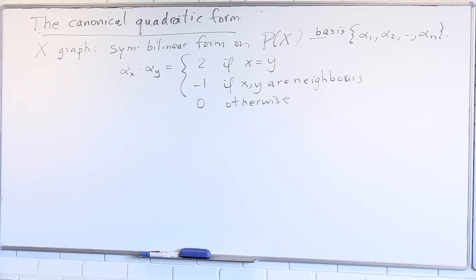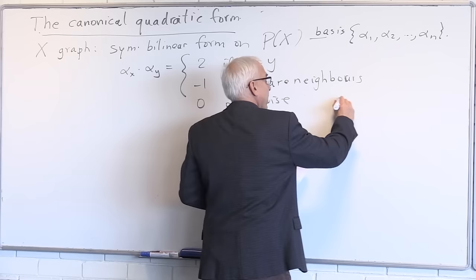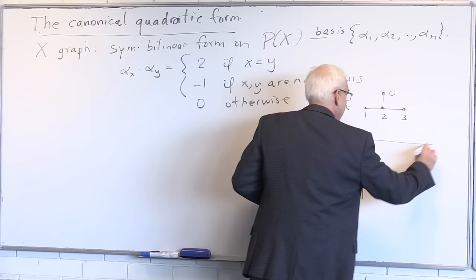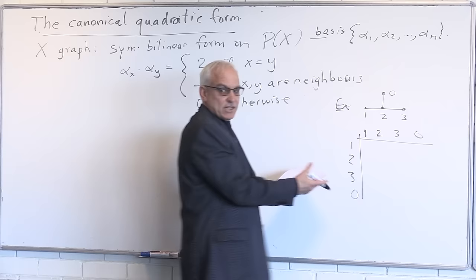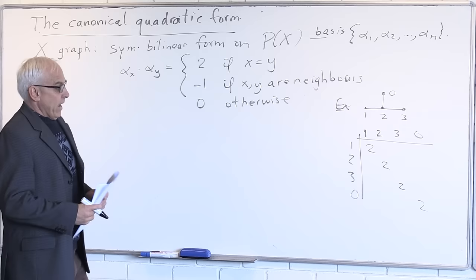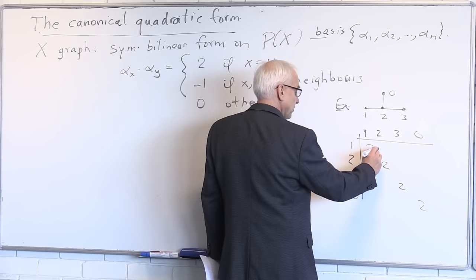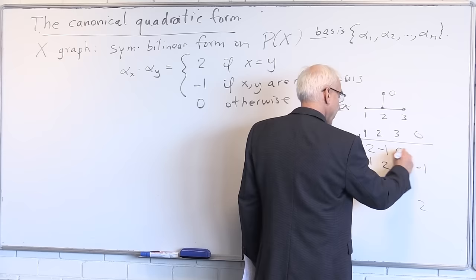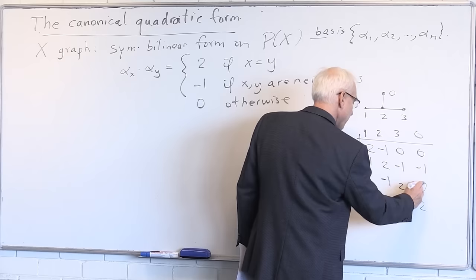It's given by a matrix. For example, for D4 with nodes 1, 2, 3, 0: the matrix for the quadratic form has 2's on the diagonal — each vector has dot product 2 with itself — and minus 1's for adjacent pairs, and zeros elsewhere. Node 2 is adjacent to 1, to 3, and to 0. So the adjacency structure determines this matrix.